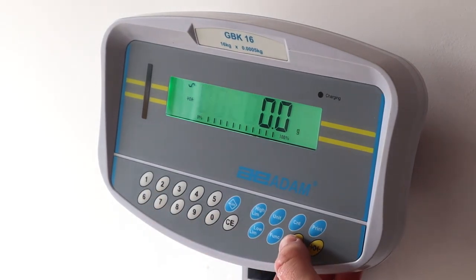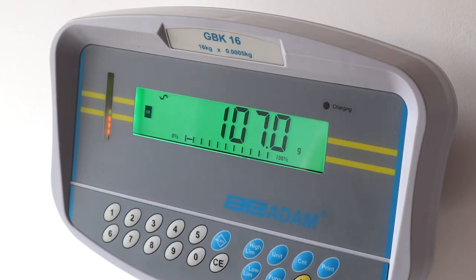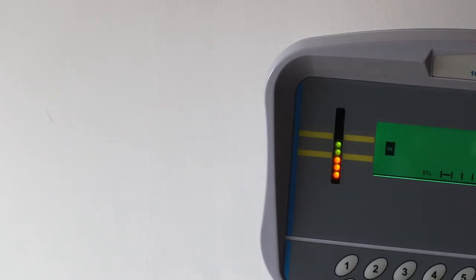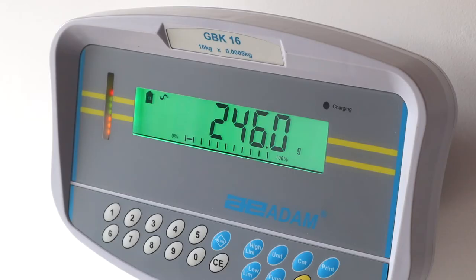Then, as items are added to the scale, LEDs will show amber if the weight is below the low limit, green if it's between the low and high limits and red if it's above the high limit.